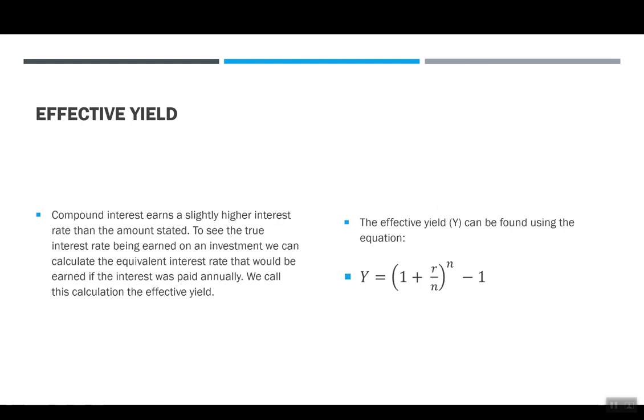As we continue to talk about compound interest, we want to introduce effective yield. Since compound interest earns a slightly higher interest rate than the amount stated, to see the true interest rate being earned on an investment, we need to calculate the equivalent interest rate that would be earned if interest was paid annually. We call this calculation the effective yield. The formula for effective yield is Y equals 1 plus R over N to the N minus 1. Sometimes you'll see this as APY, the annual percentage yield, and it just gives us that different kind of calculation to say what's happening really in the whole year, how much interest am I getting?